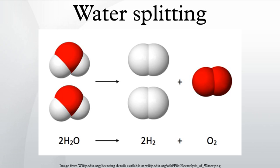Photo-electrochemical water splitting using electricity produced by photovoltaic systems potentially offers the cleanest way to produce hydrogen. Water is broken down into hydrogen and oxygen by electrolysis, but the electrical energy is obtained by a photo-electrochemical cell process. The system is also named artificial photosynthesis.